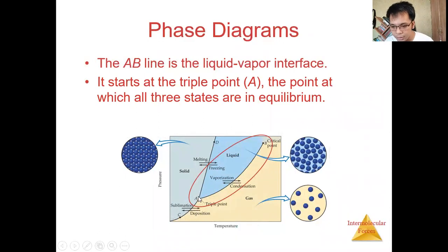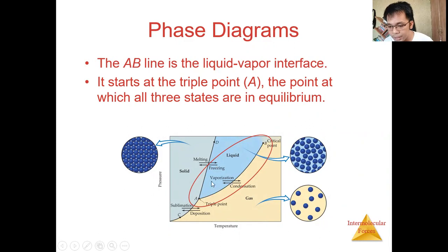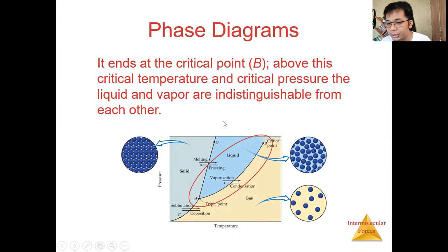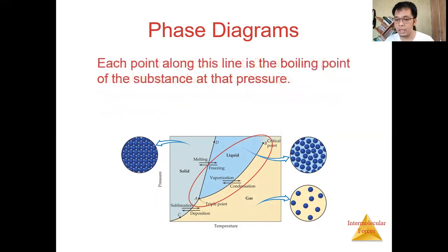Along the line from A to B, we have vaporization and condensation occurring simultaneously at a specified pressure and temperature. It ends at a critical point B, above which we have the critical temperature and critical pressure, where the liquid and vapor phases are indistinguishable.